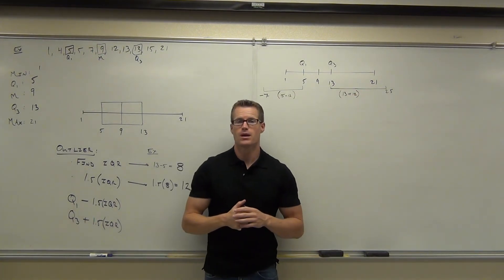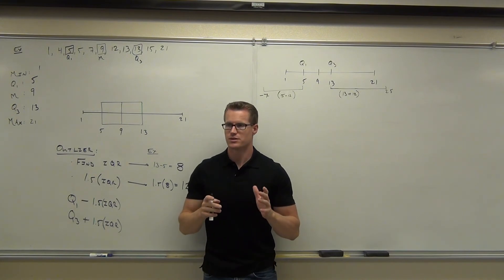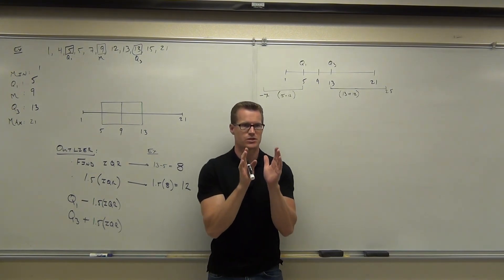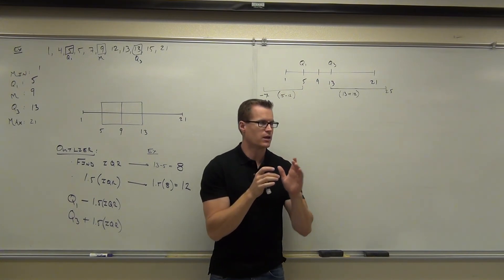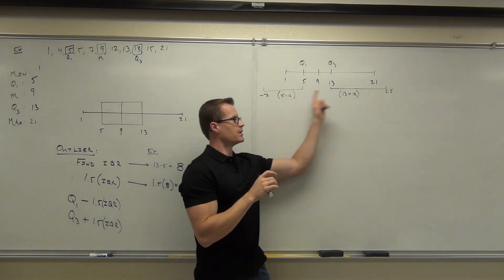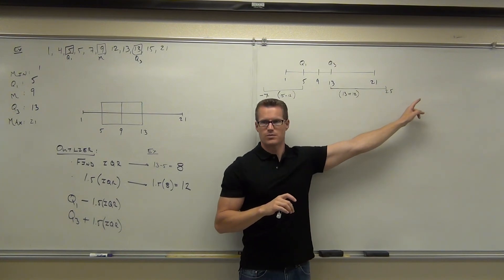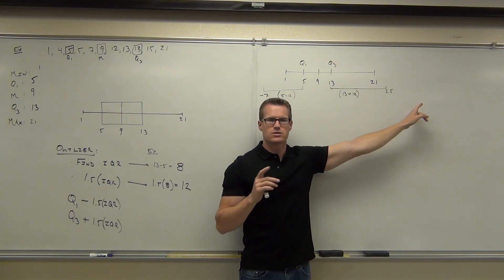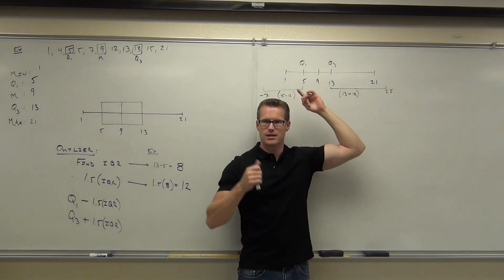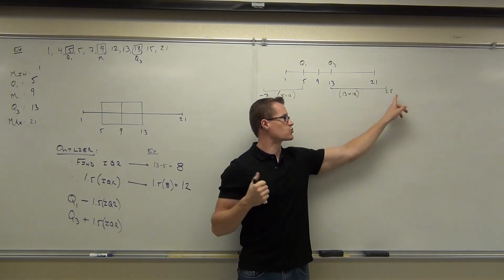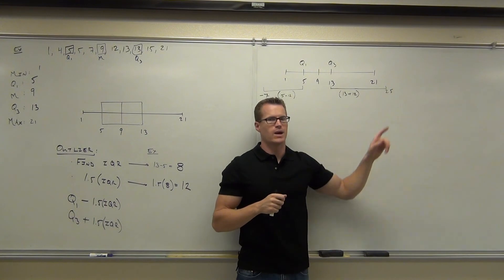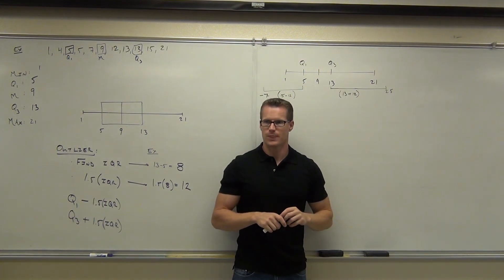Okay, listen. What you do is now you look at this and you consider your range of numbers. The range of numbers we're looking at, look at the board, is negative 7 to positive 25. You with me? Do you have anything in your data set that is less than negative 7? Okay. Do you have anything in your data set that is greater than 25? Then you have no outliers.